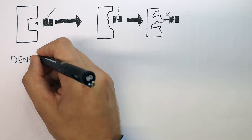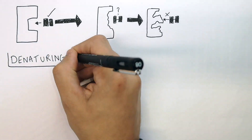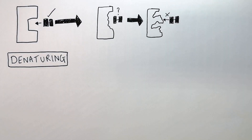So denaturing is when the active site of an enzyme changes shape so the substrate can no longer bind the active site of the enzyme.